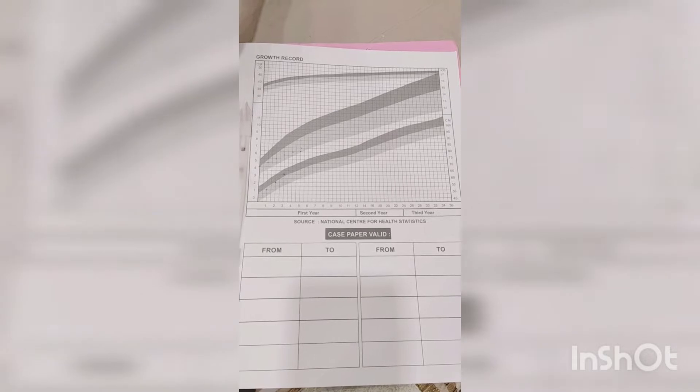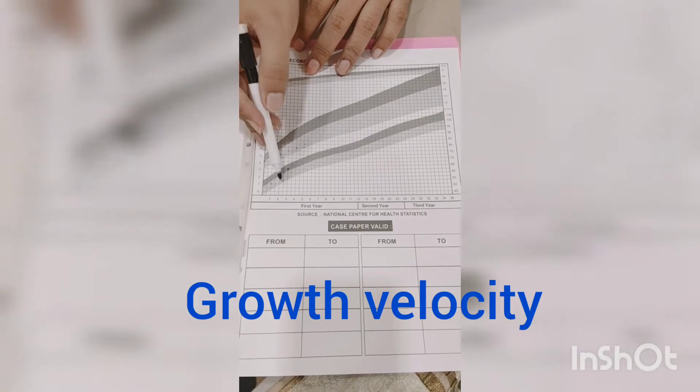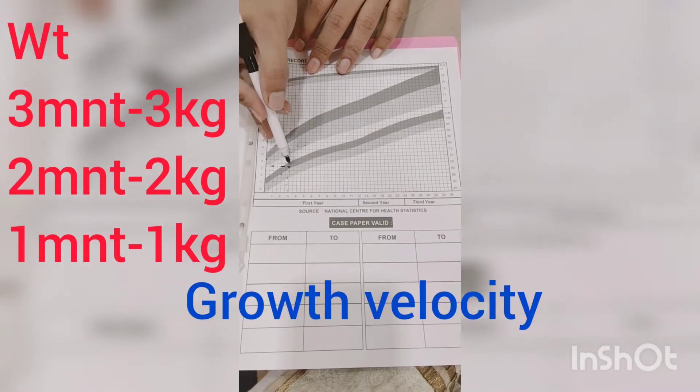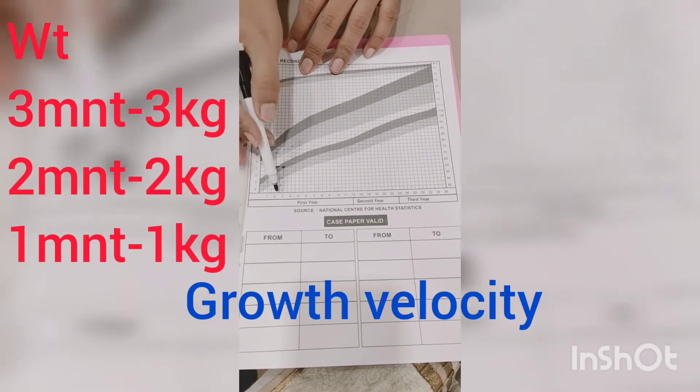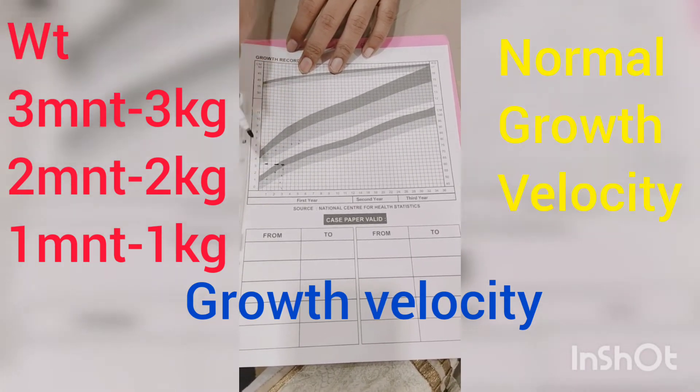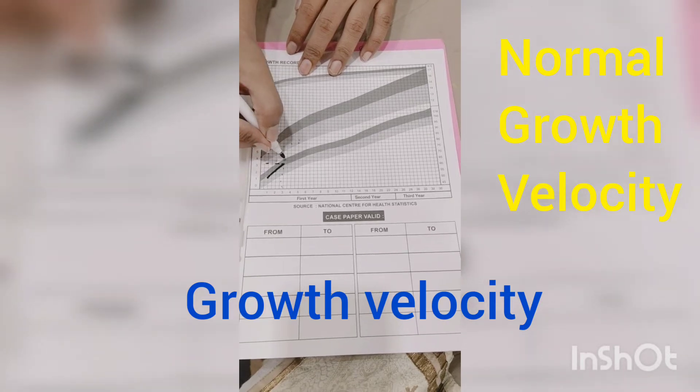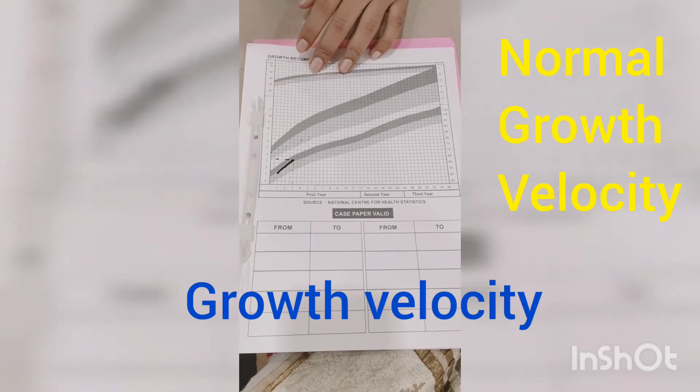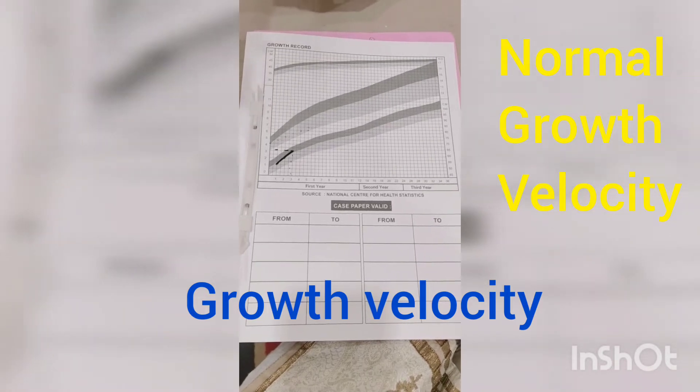Now we'll talk about a very important concept called growth velocity. Look at this child. He is three months old with a weight of 3 kg. If we consider normal ranges, he is grossly underweight. But when we see his earlier records, at two months he was 2 kg, at one month he was 1 kg. If we plot this curve, you can see he is growing appropriately. This explains that it's not just the weight at one time, but the various plots which give the velocity of the curve, which is very important.